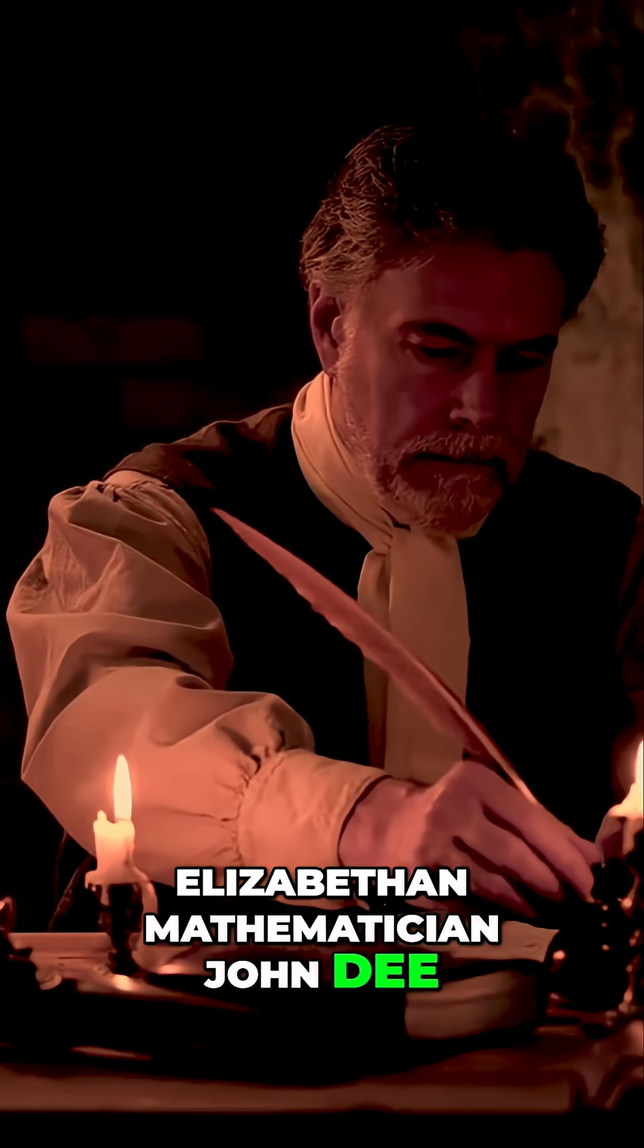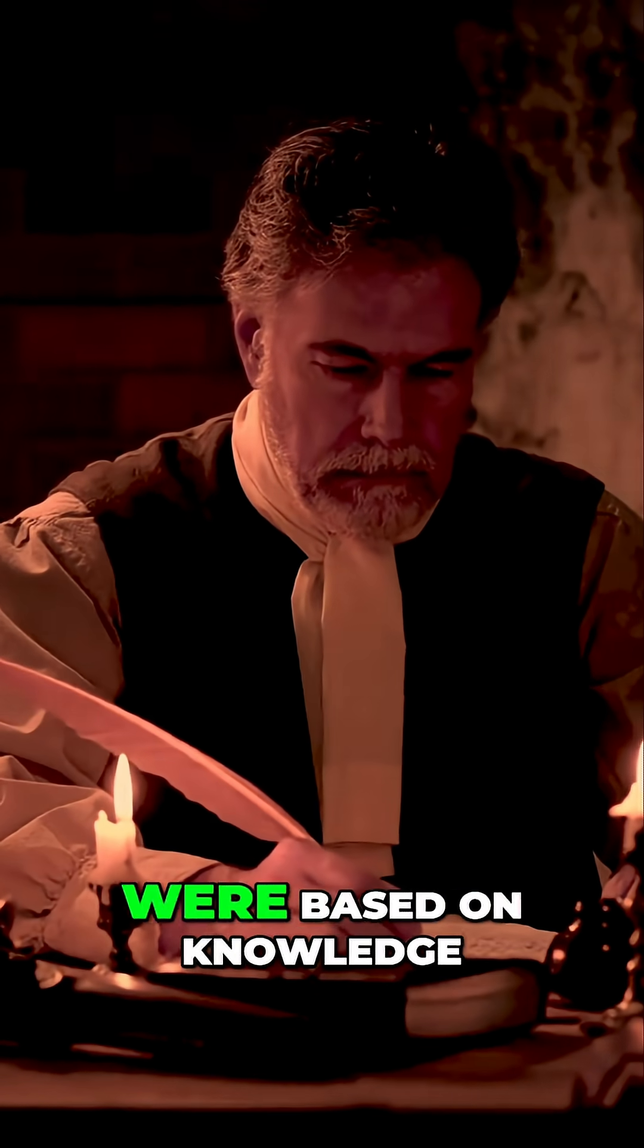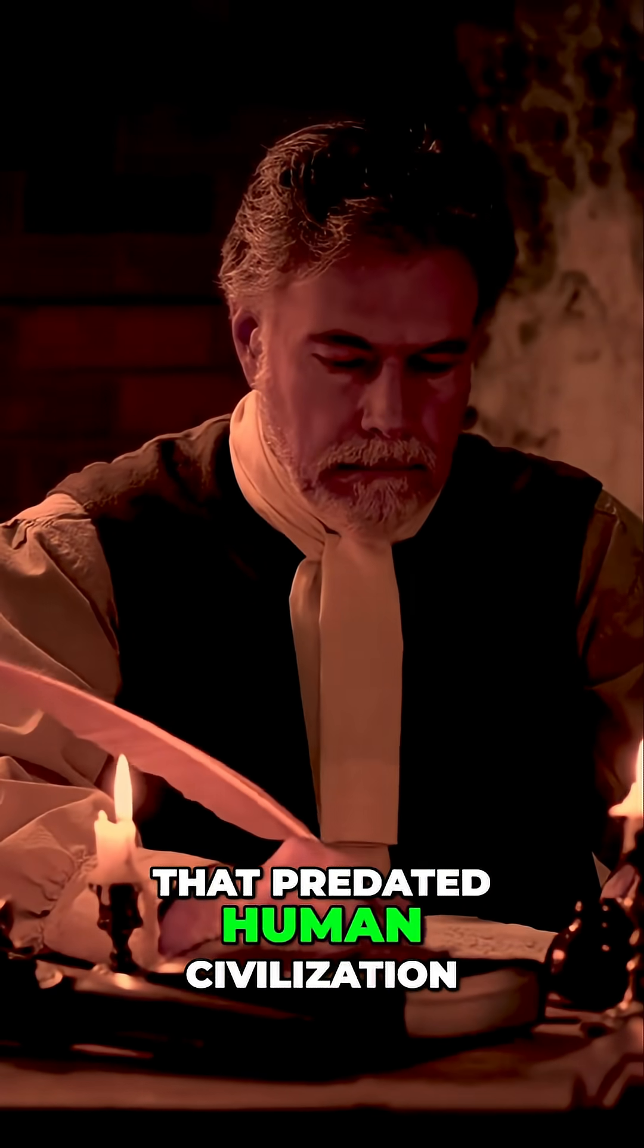Elizabethan mathematician John Dee spent years trying to decipher the book, claiming that an archangel told him the tables were based on knowledge that predated human civilization.